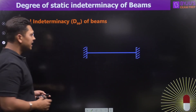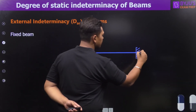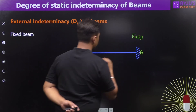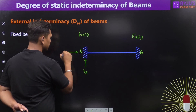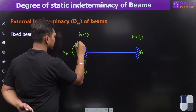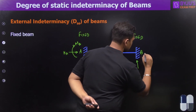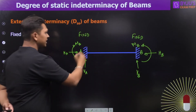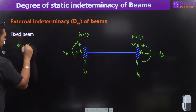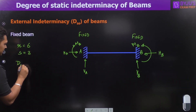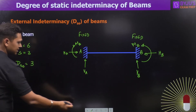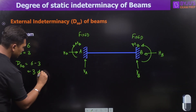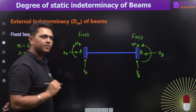For a fixed beam, both supports A and B are fixed, giving three reactions at each support. Number of unknown reactions = 6, equilibrium equations = 3, so the degree of static external indeterminacy = 6 minus 3 = 3. This structure is indeterminate by three degrees.